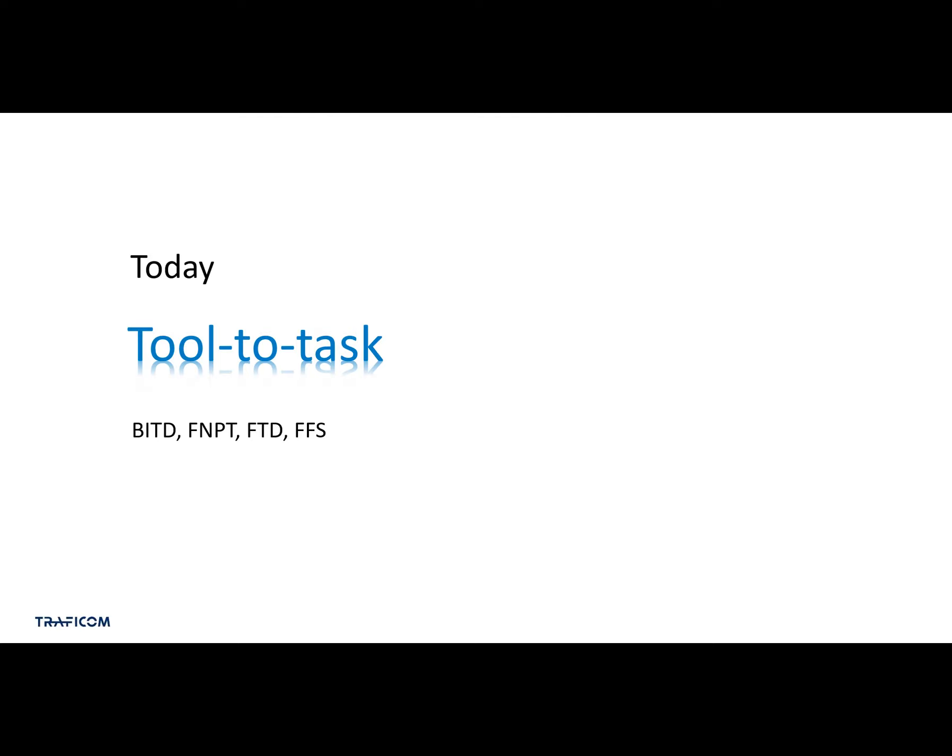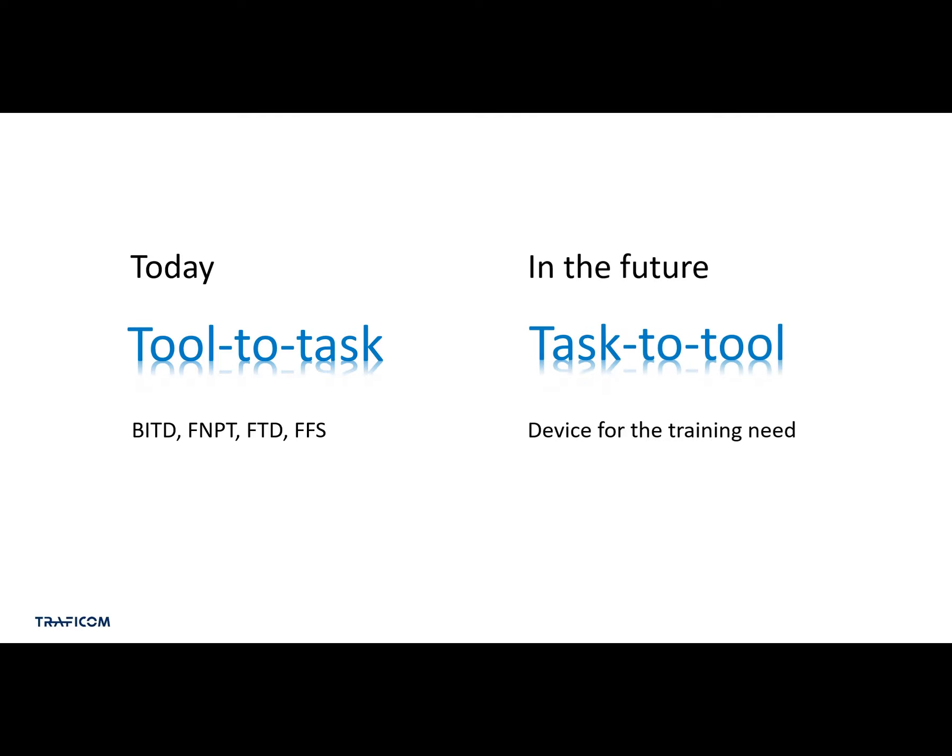Today's regulatory framework is focused on the FSTD types and levels — we talk about the tool-to-task approach, where regulations tell what FSTD type and level should be used for training tasks. As we know, it is not too flexible. The new task-to-tool approach turns this around and puts the training needs into the center. By first determining what we need to train, we can decide the right FSTD for those training activities, and the device can have a targeted fidelity towards our training needs.